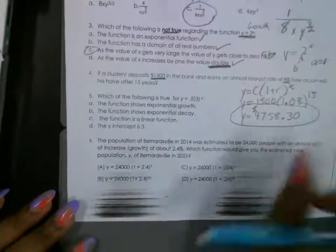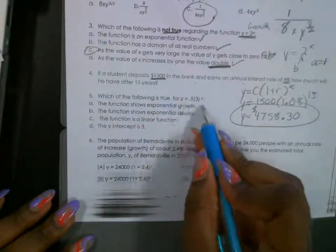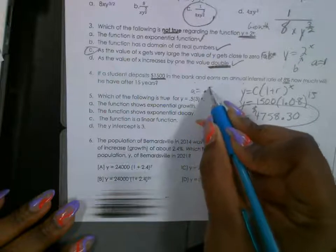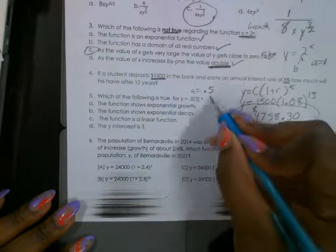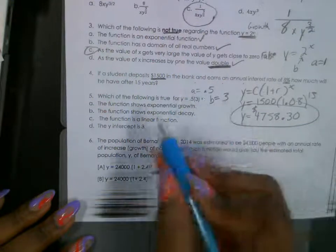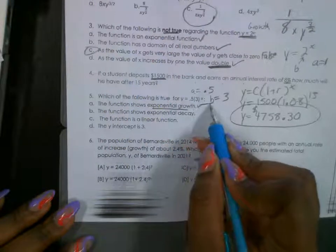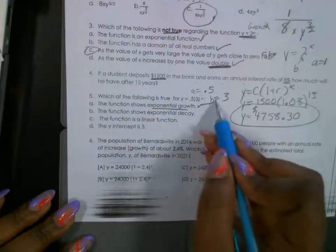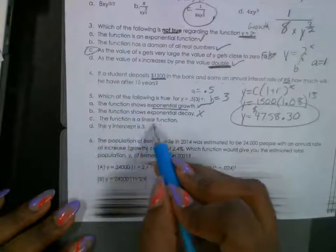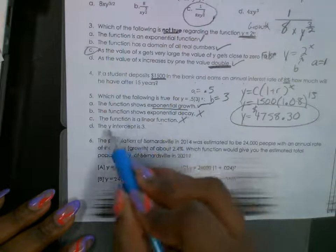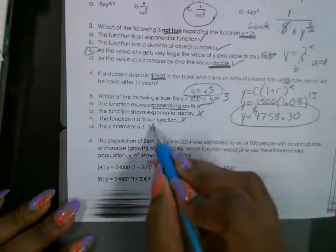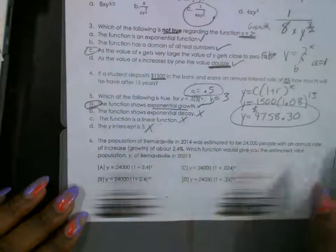All right. So now number five says, which of the following is true about this one? Well, my A here, this is my starting amount, is 0.5, and my B, my common ratio, is 3. My B is greater than 1, so it's exponential growth. This is true. It's not decay because B would have to be less than 1, so this is the one that's, this is false. This is not a linear function. That's false. And the y-intercept, the y-intercept is 0.5. That's my y-intercept. So this is also false. So the only one that's true is A.